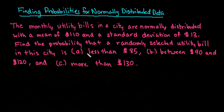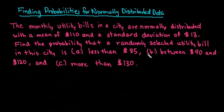For this video, we are going to learn how to find the probability for normally distributed data using hand calculations. This will show you how to convert a random variable x to a z-score and then use a table to find the probability or the area under the curve. You can check out my videos on how to find this using both the TI-84 or the TI-Inspire graphing calculators because I do the same problem using those two graphing calculators as a shortcut.